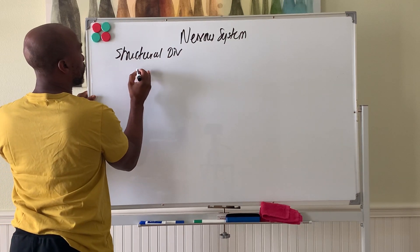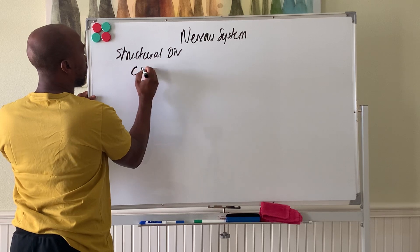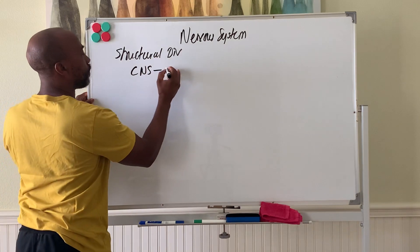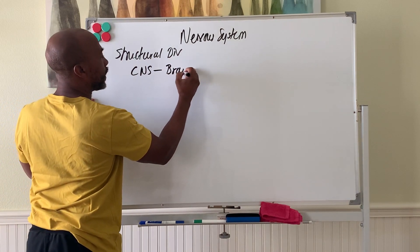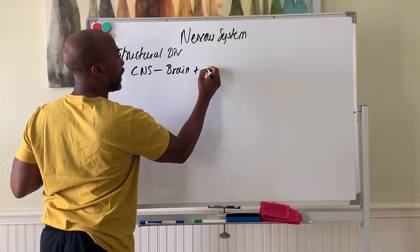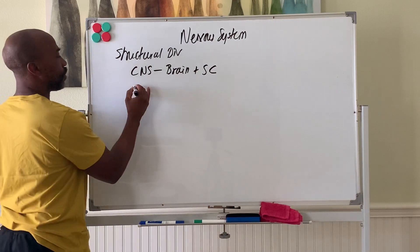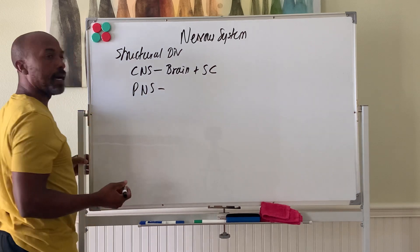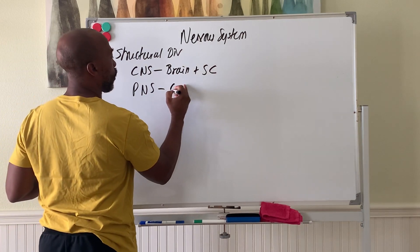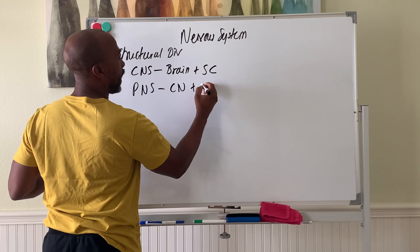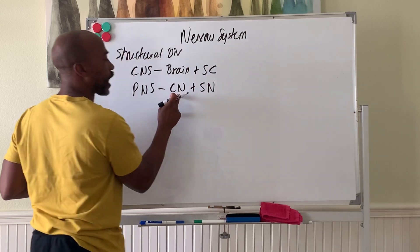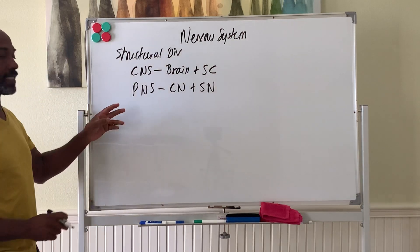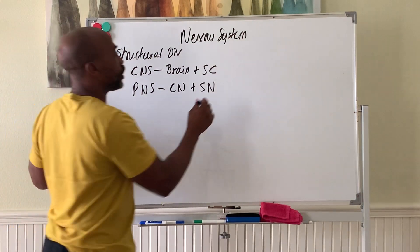You have your CNS, which is the central nervous system, made up of the brain and spinal cord. Then you have your PNS, the peripheral nervous system, made up of your cranial nerves and spinal nerves — nerves that come off the brain and nerves that emerge from the spinal cord make up the PNS more or less. Then we have some functional divisions.